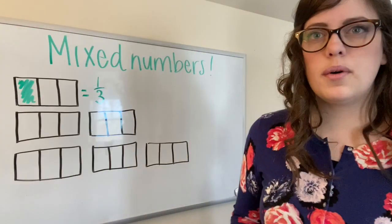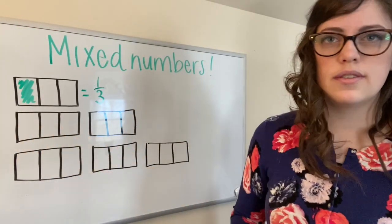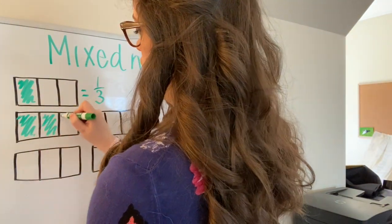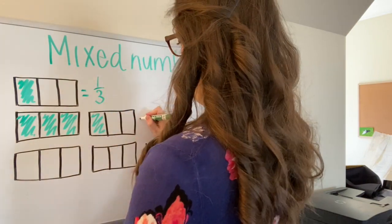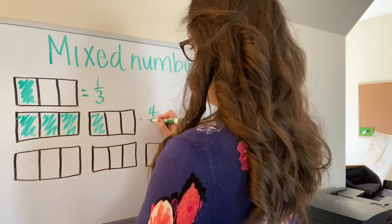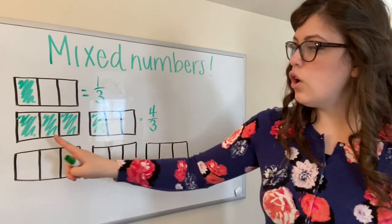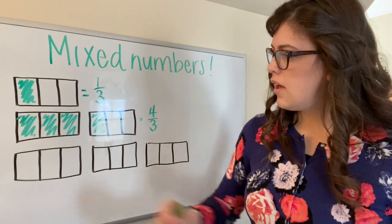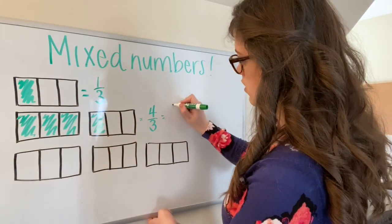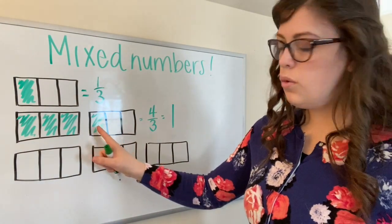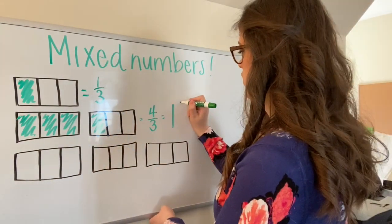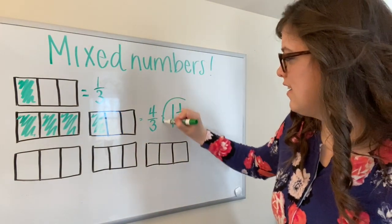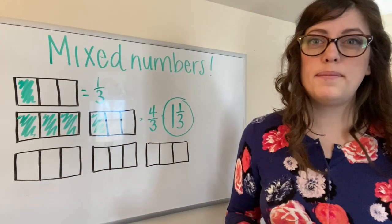But what do you think will happen when I have four thirds? So I'm going to go ahead and color in four thirds. How many wholes and how many thirds do I have? I have one whole and one third. And this is how I would write it. This right here is what a mixed number is.